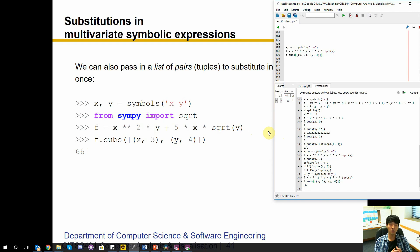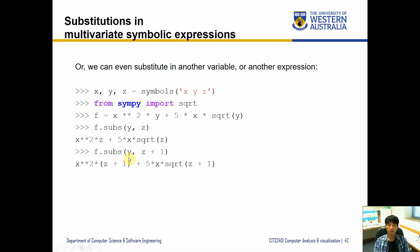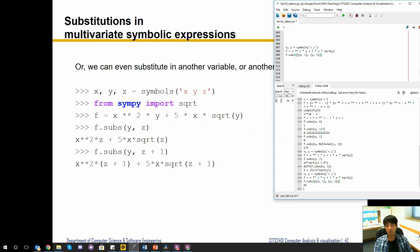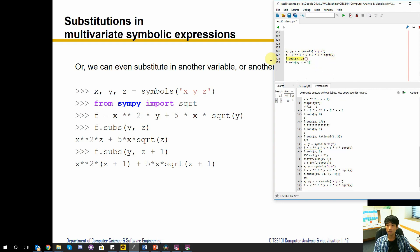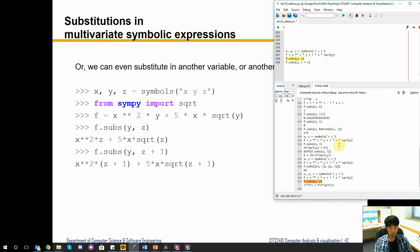We can even substitute in another variable — it doesn't have to be a number. For example, creating three symbols x, y, and z, we can substitute y with z. Wherever y appeared, it's replaced by z. You can also substitute with an expression: if y equals z + 1, then z + 1 replaces all occurrences of y in the formula.